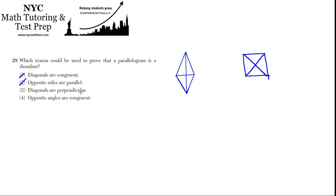Diagonals are perpendicular — that's the one. In a typical parallelogram, these diagonals can meet at a slant; they don't necessarily have to be right angles. But if it's a rhombus, then they definitely will be right angles. That's the key.